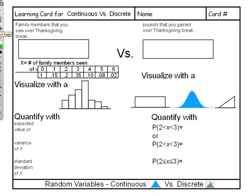We're looking at continuous versus discrete, and we're going to focus on the discrete aspect. If you had pounds that you gained over Thanksgiving break, that's considered continuous. You might say I gained three pounds, somebody else says ten pounds, but somebody could say 3.7, then 3.75, and 3.751—there's an infinite number of possibilities.